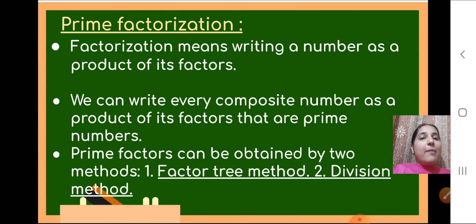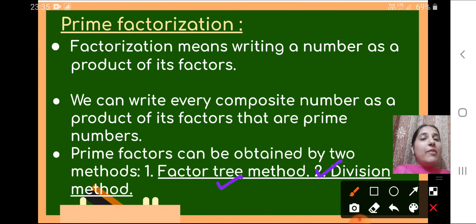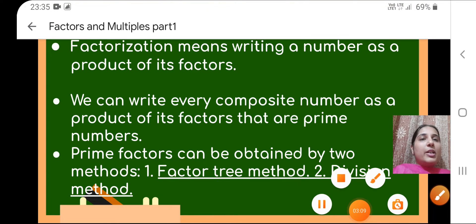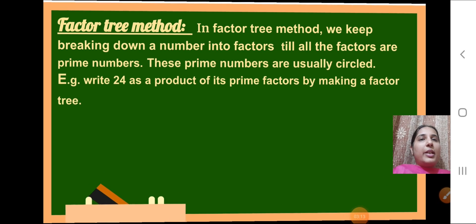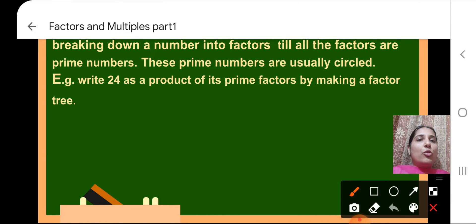Now how do we find the prime factors of a number? There are two methods: the first one is the factor tree method, and the second one is the division method. Today we will see how to find the prime factors of a number using these two methods. In the factor tree method, we keep breaking down a number into factors until all the factors are prime numbers, and these prime numbers are usually circled.